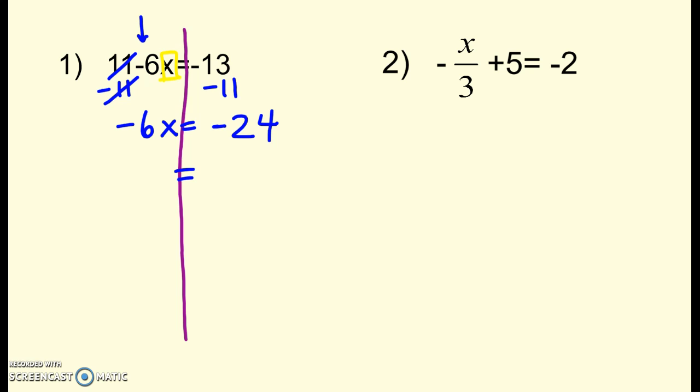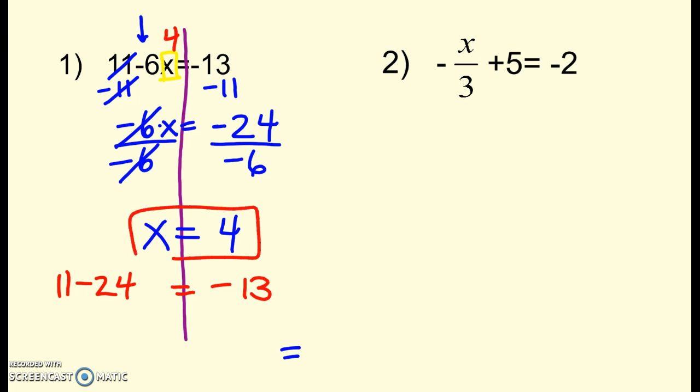Next step, I see multiplication here between the negative 6 and the x. So I would need to divide. Let's move that out of the way. Divide by negative 6. Whatever I do on one side, I have to do on the other. Cross out what cancels. And bring it down. x is equal to, well, negative 24 divided by negative 6 is positive 4. So let's plug that back in and check it. If I put 4 in there, I would be doing negative 6 times 4 plus 11 minus 24. And that does equal negative 13. So I checked it. I know it's right.